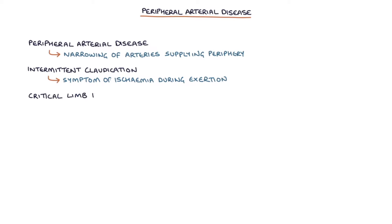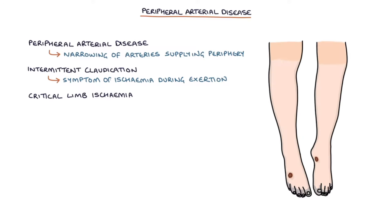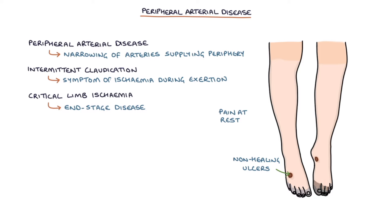Critical limb ischemia is the end stage of peripheral arterial disease, where there is an inadequate supply of blood to a limb to allow it to function normally at rest. The features are pain at rest, non-healing ulcers, and gangrene. There is a significant risk of losing the limb.